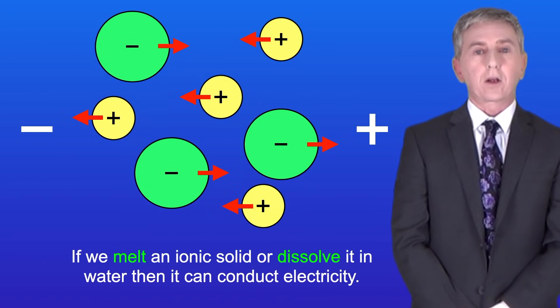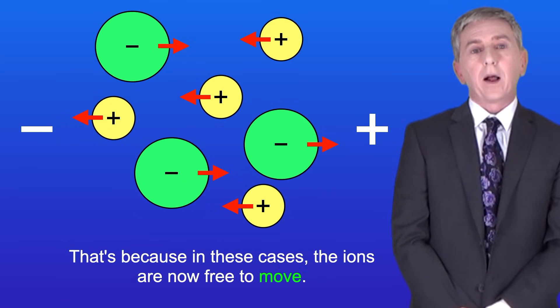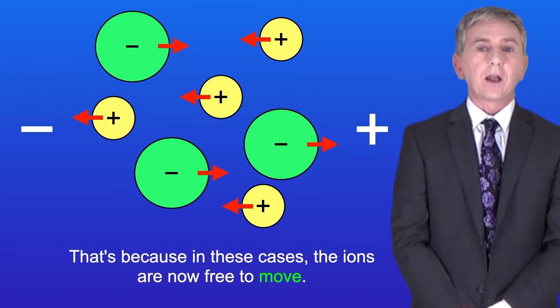If we melt an ionic solid or dissolve it in water, then it can conduct electricity. That's because in these cases, the ions are now free to move.